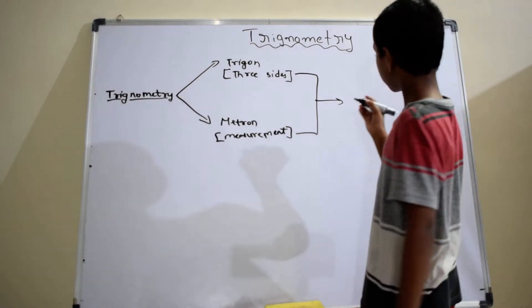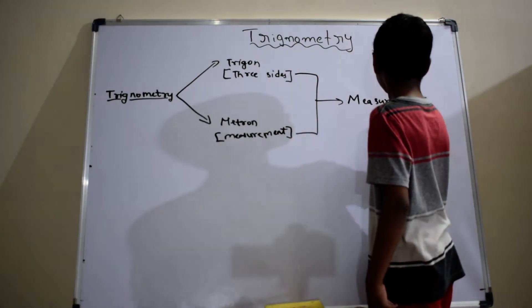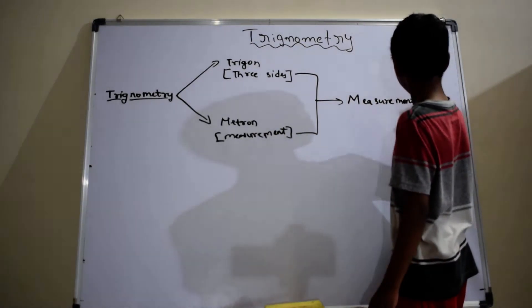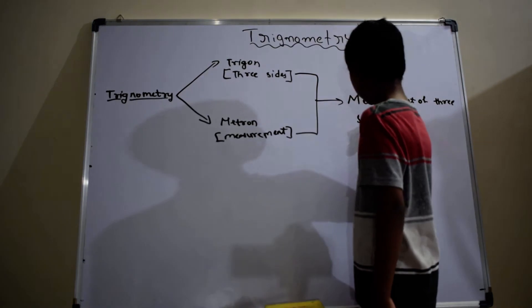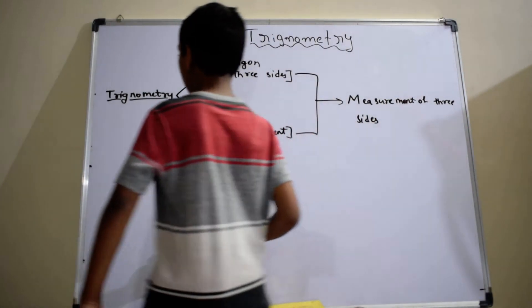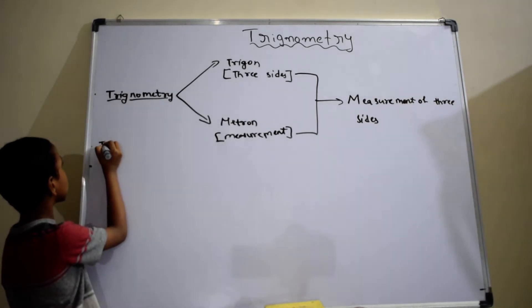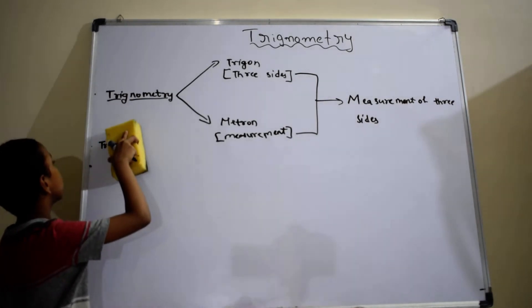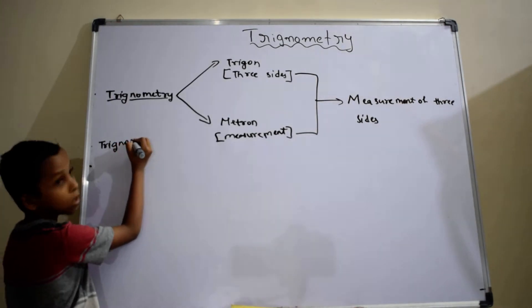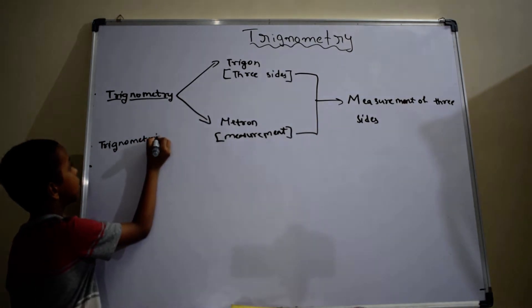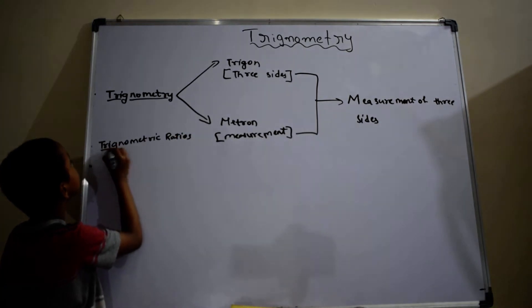So trigonometry means measurement of three sides. Now I am explaining trigonometric ratios. Trigonometric ratios.